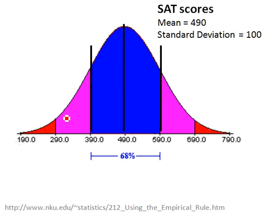When you're drawing a normal distribution and you want to know where to mark the first standard deviation, you put that first standard deviation right where the shape of the normal curve changes from going downward to starting to go outward. The same distance you see between the mean and one standard deviation, you use that same distance for two standard deviations, same distance for three standard deviations, and so on, both above the mean and below the mean.